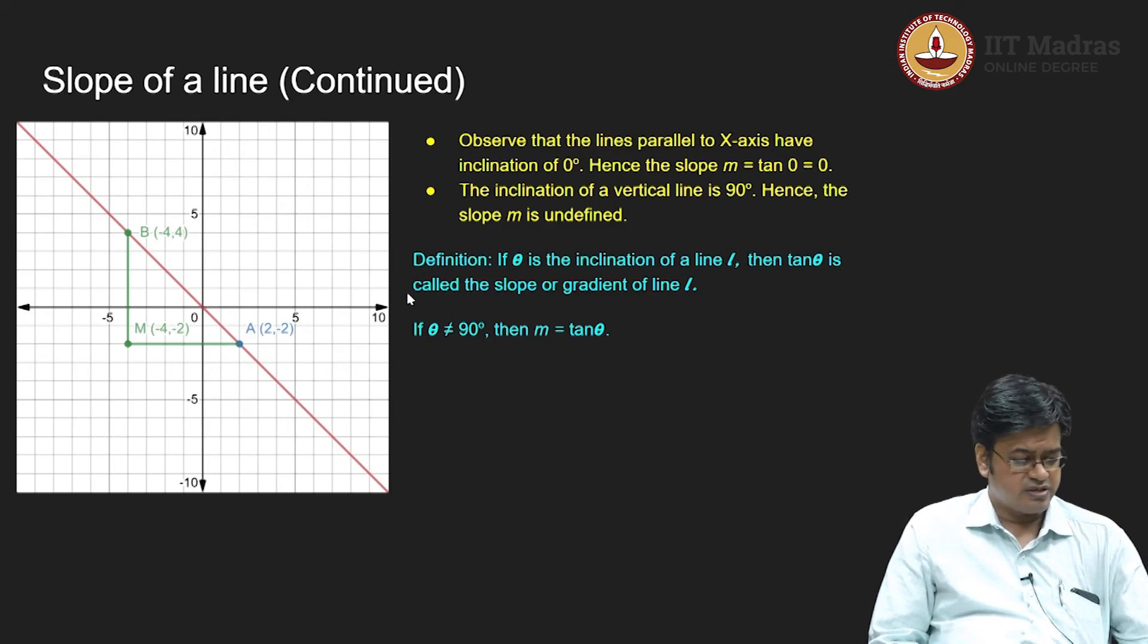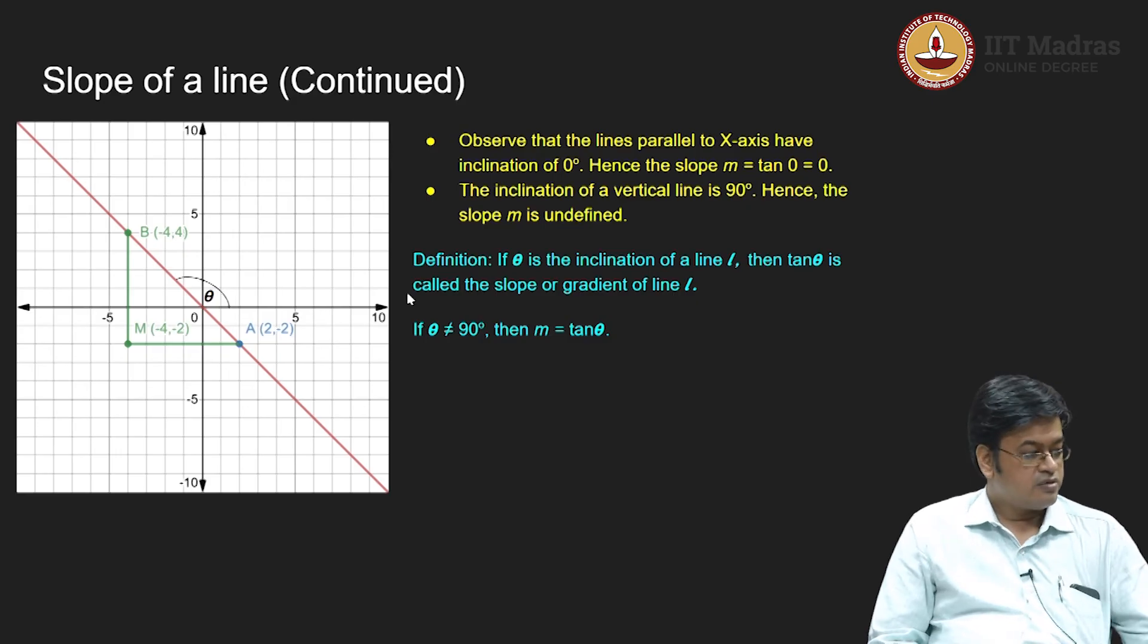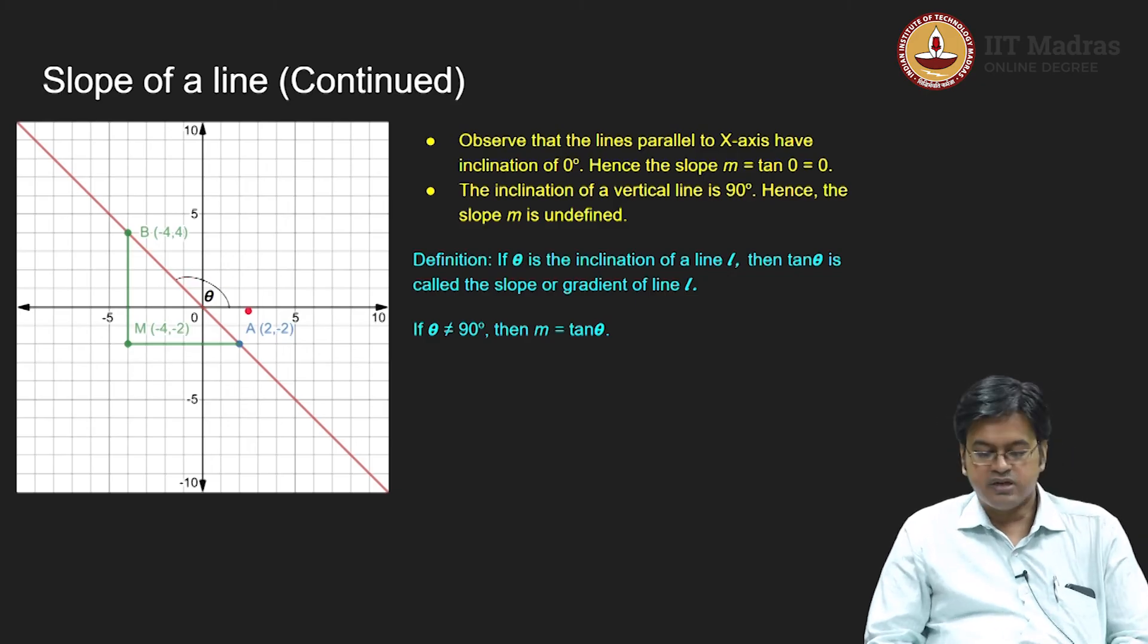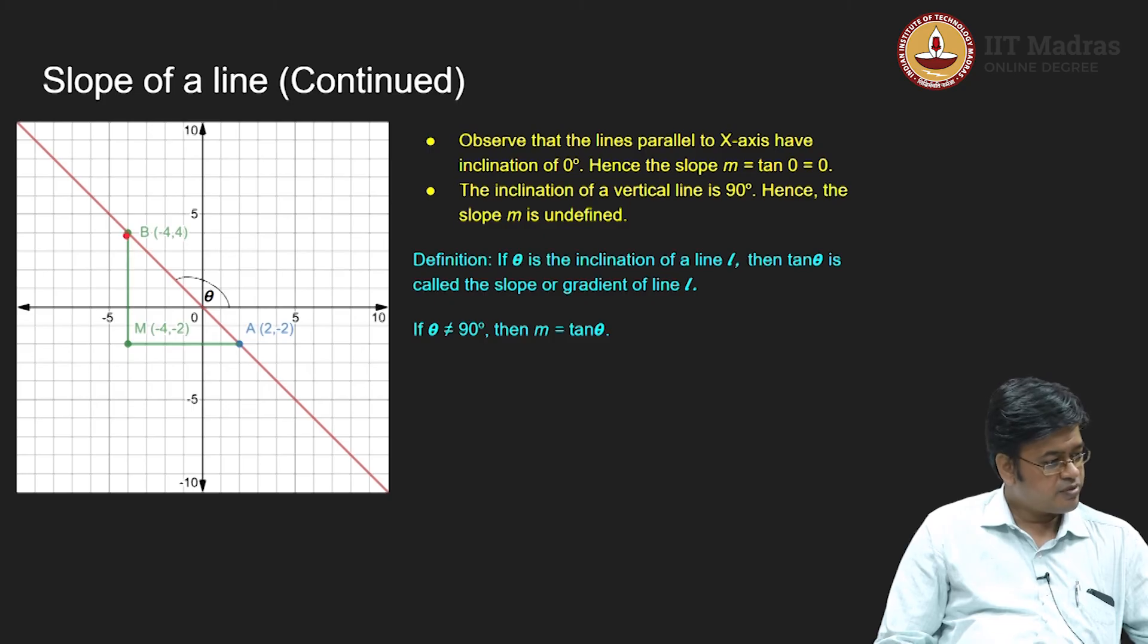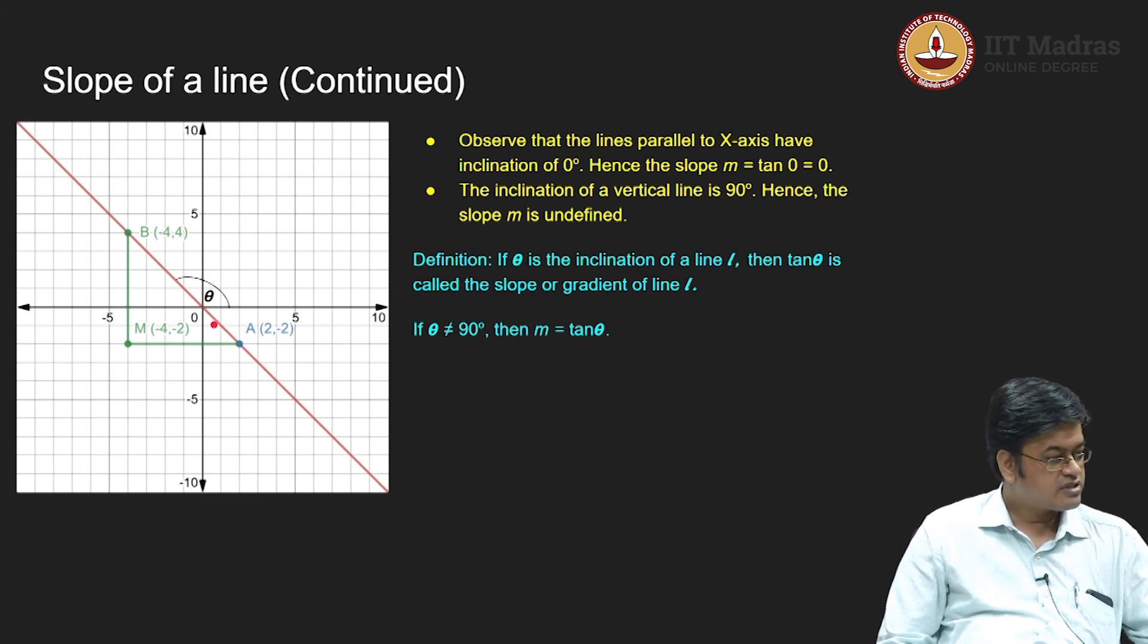For example, now what is theta over here? Theta over here is actually this particular angle, this is theta. Now if you look at this particular angle which is theta, you can see that this is an obtuse angle. Now how to evaluate a tan of this angle? We already know some methods, but will that contradict with our definition of slope, that is the question. So if I use the rise by run formula or the change in y upon change in x formula, how will I figure out the slope? So the answer is I will simply drop a perpendicular or I will construct a right angle triangle with right angle at point M which is minus 4 comma minus 2. In that case I will be interested in this angle.